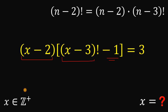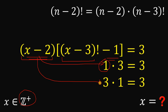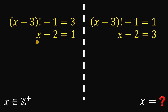Since x is a positive integer, the only factor pairs of 3 are 1 times 3 or 3 times 1. So we have two cases: Case 1 — x minus 2 equals 1 and x minus 3 factorial minus 1 equals 3. Case 2 — x minus 2 equals 3 and x minus 3 factorial minus 1 equals 1.